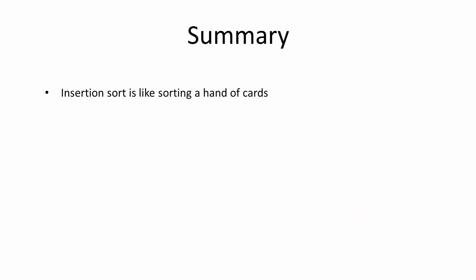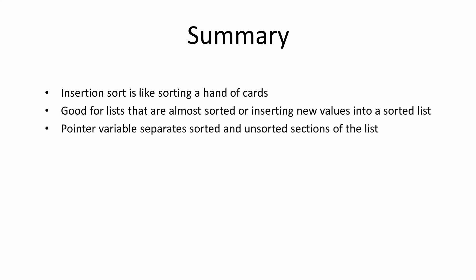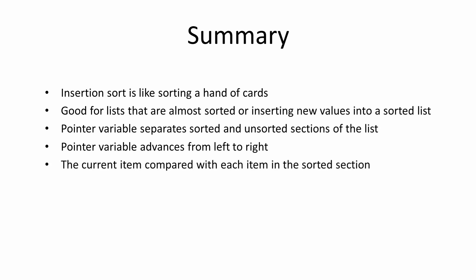To summarise, the insertion sort can be compared to sorting a hand of cards. It's particularly good for lists that are almost fully sorted already, or when you just want to insert a single item into a list that's already in order. For example, the high scoreboard of a game would be a good candidate for an insertion sort. A pointer variable separates the sorted section of the list on the left from the unsorted section on the right. The pointer advances from left to right as the sort progresses. One after another, each item in the unsorted section is made current. The current item is compared with each item in the sorted section, and sorted items are copied to a new position if necessary.